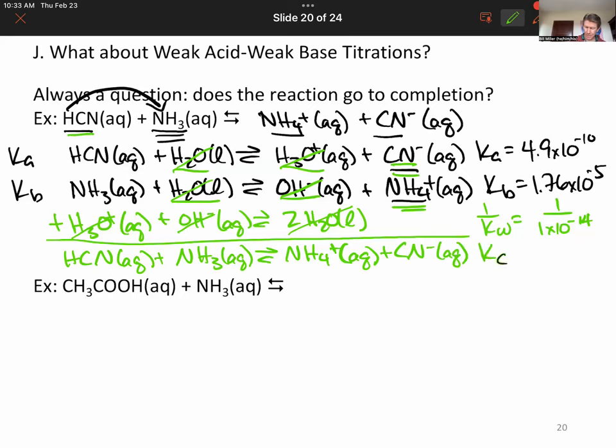And our KC for this will be to multiply all these numbers together. I'm going to do 4.9 times 10 to the minus 10 times 1.76 times 10 to the minus 5 and then divided by, since it's written that way, 1 exponent 14 minus, and I get 0.86.